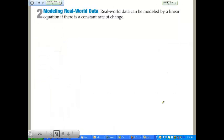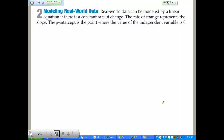Now what if we were to do a real world problem with this? Real world data can be modeled by a linear equation if there's a constant rate of change. The rate of change is represented by the slope. And the y intercept is the point where the value of the independent variable is zero.